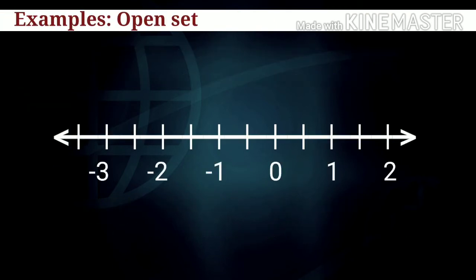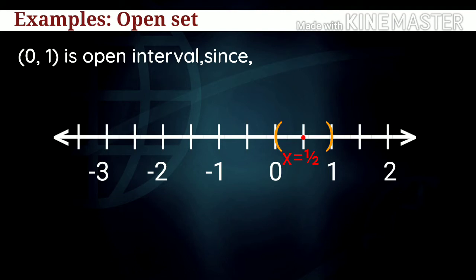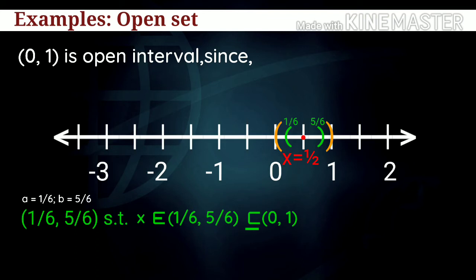Now we will discuss examples of open sets. The interval (0,1) is said to be an open set because by definition, if we take any element x belonging to interval (0,1), then we are always able to find an interval (a,b) such that x belongs to interval (a,b) and interval (a,b) itself lies inside interval (0,1).